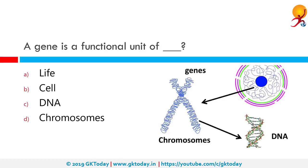A gene is the functional unit of chromosomes. A gene is the basic physical and functional unit of heredity. Genes, which are made up of DNA, act as instructions to make molecules called proteins. In humans, genes vary in size from a few hundred DNA bases to more than 2 million bases.